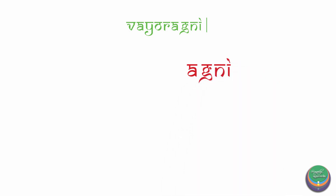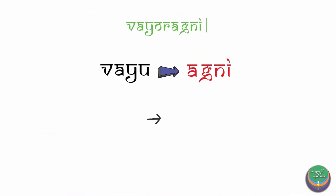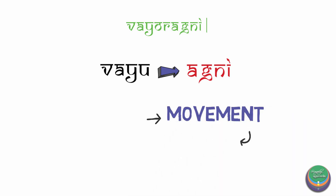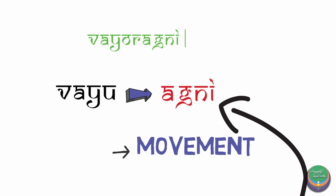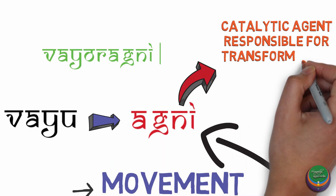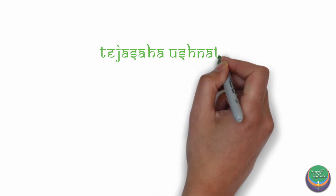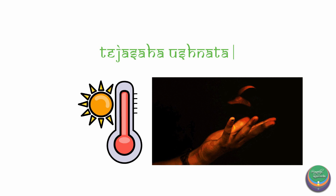The sloka 'Vayuragni' from the Taithariya Upanishad states that Agni is formed from Vayu. This concurs with what we explained previously — Vayu Mahabhuta is movement, and any kind of movement when arrested or met with resistance leads to production of energy in the form of heat, light, etc. This energy corresponds with Agni Mahabhuta. It is the catalytic agent which causes change or conversion in this universe. The characteristic feature of this Mahabhuta is explained as 'Tejasaha Ushnata' — heat is the characteristic feature of Tejas or Agni.